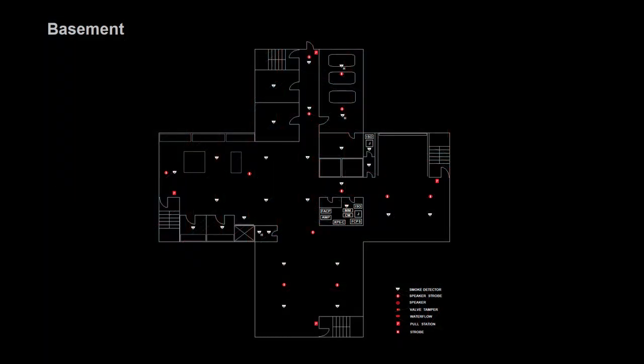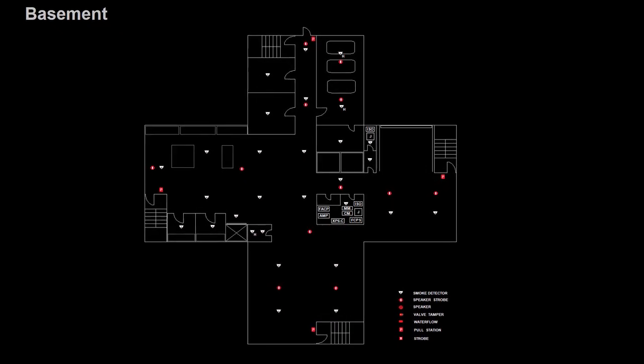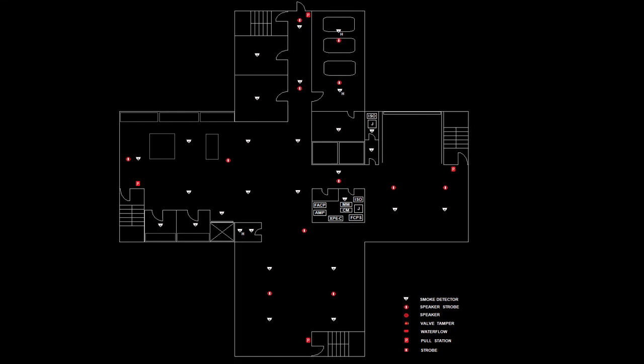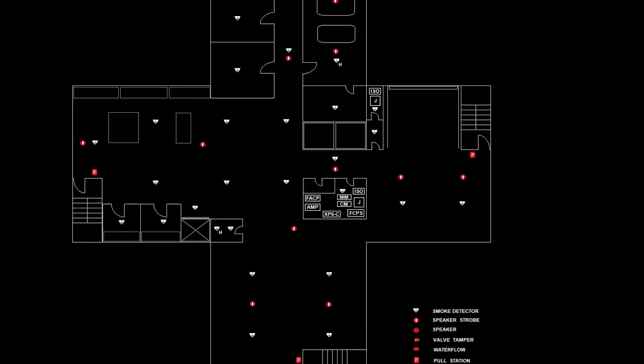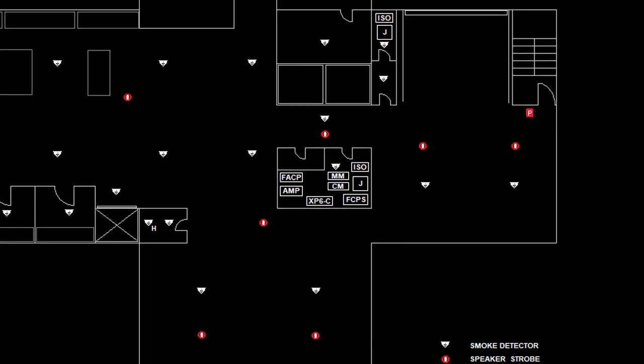Suffice it to say that the SLC will leave the fire alarm control panel in one conduit, hit each device in sequence, and then return back to the panel in a separate conduit maintaining at least five feet of separation between the two conduit runs wherever possible.